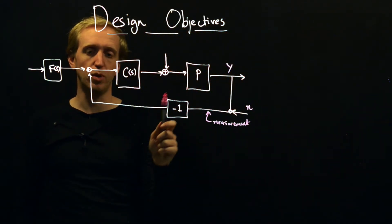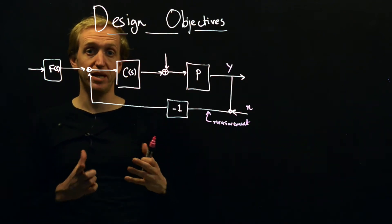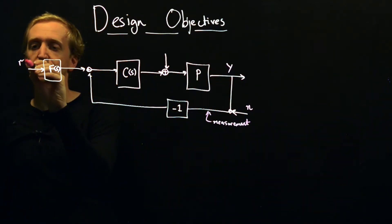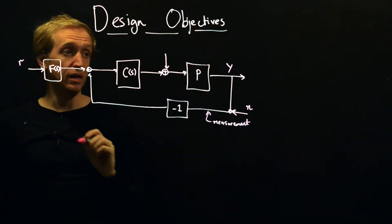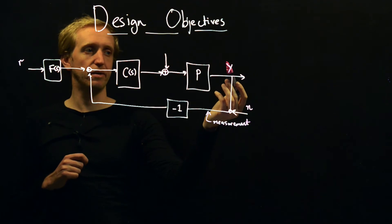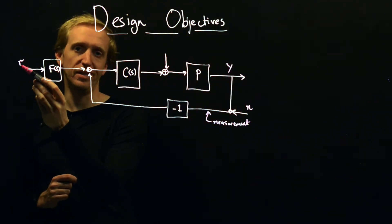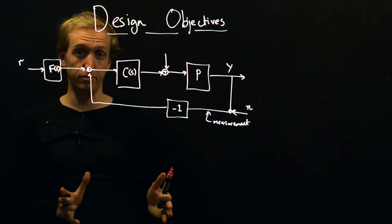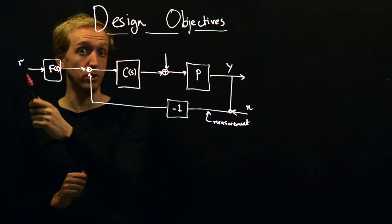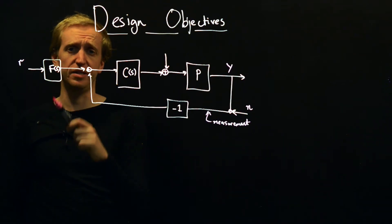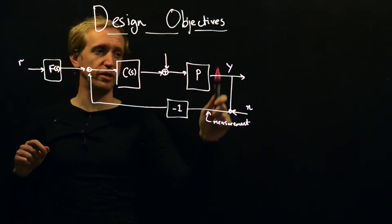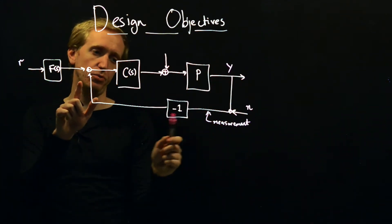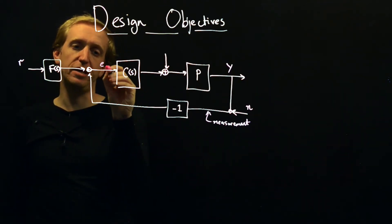And what we then do is we put it through a minus one. Why do we put it through a minus one? Well what we're going to do is we're going to compare it to some desired value, and this is what's typically meant by the reference. You put your reference signal in over here typically, and the objective is to make the output equal to the value that we want it to follow. So maybe this is setting the distance to the car in front that we want, or maybe this is setting the velocity that we want.